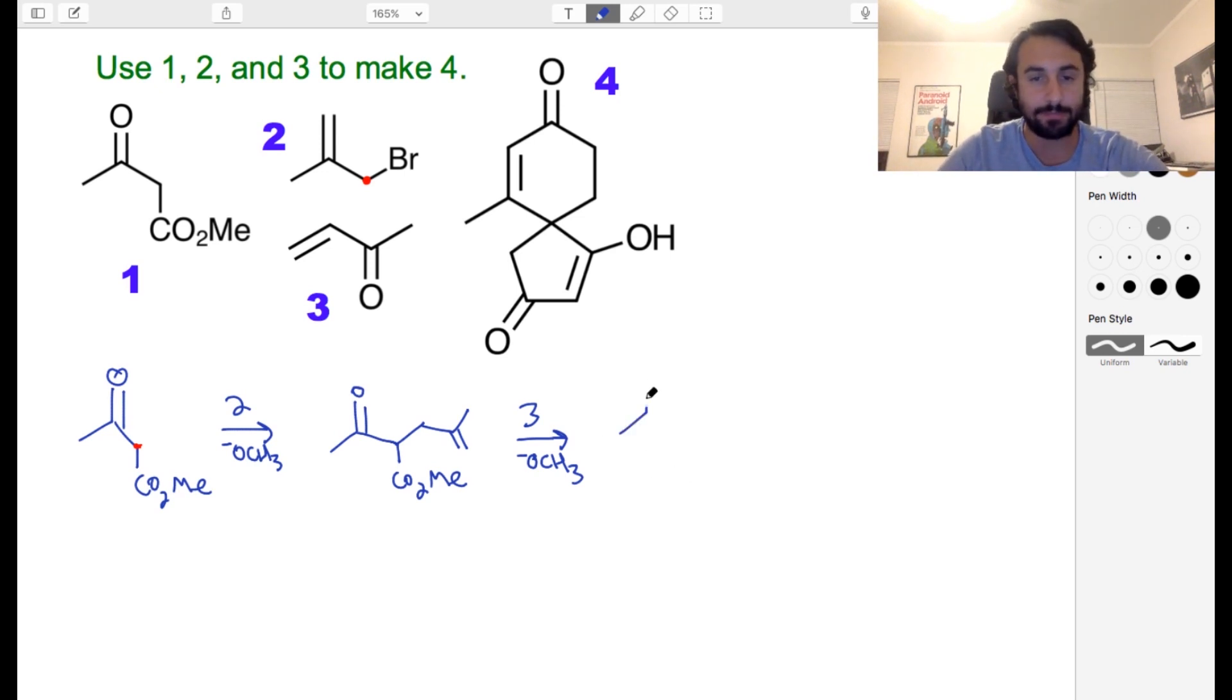It's going to enolize at the same location - it's still going to enolize there, we're still adjacent to two carbonyls. That is certainly the most acidic location. It's going to attack right here, so we've got another carbon and then another carbon and then the carbonyl will reform after tautomerization.